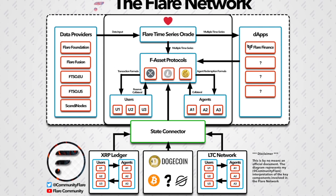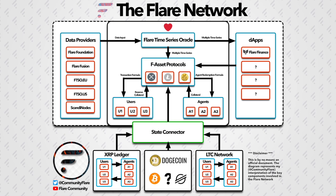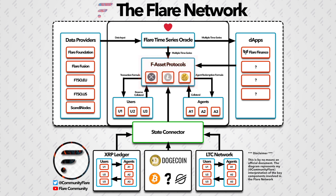So let us summarize some of the key components which make up the Flare Network. We have the Flare Time Series Oracle, responsible for outputting price estimates in a decentralized manner. We have the data providers, working hard to calculate the most accurate price to send to the FTSO in return for a reward. We have various decentralized applications to be utilized by users on the Flare Network. We have the F-Protocols or F-Systems, responsible for coordinating the creation and redemption of F-assets. And finally, we have the State Connector, monitoring the activity of external networks and reporting transactions to the F-Systems, to ensure everything is running smoothly.